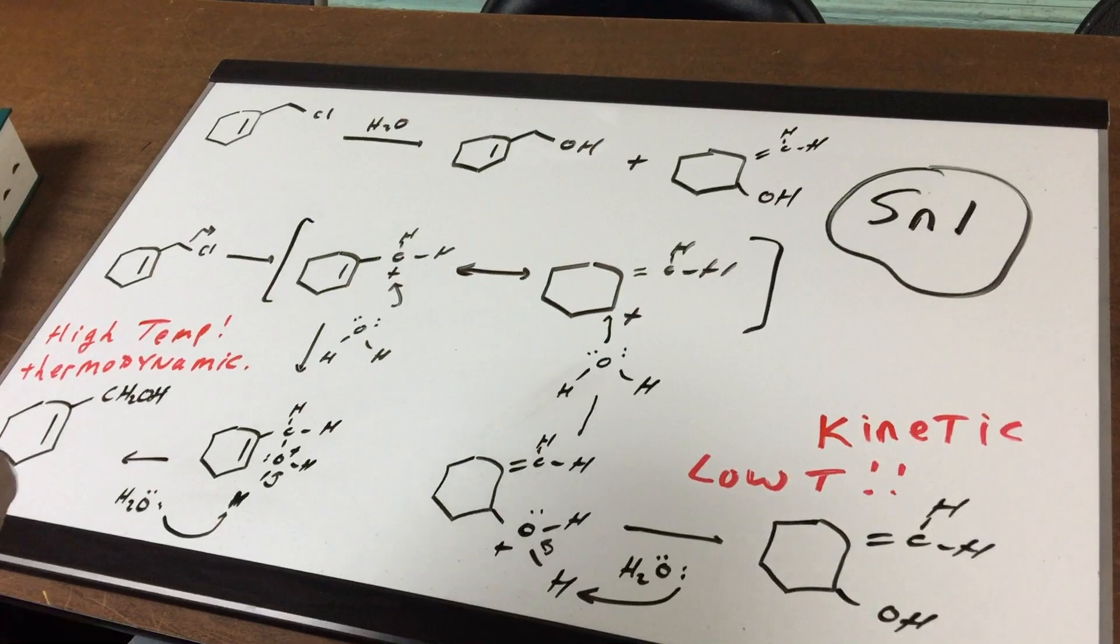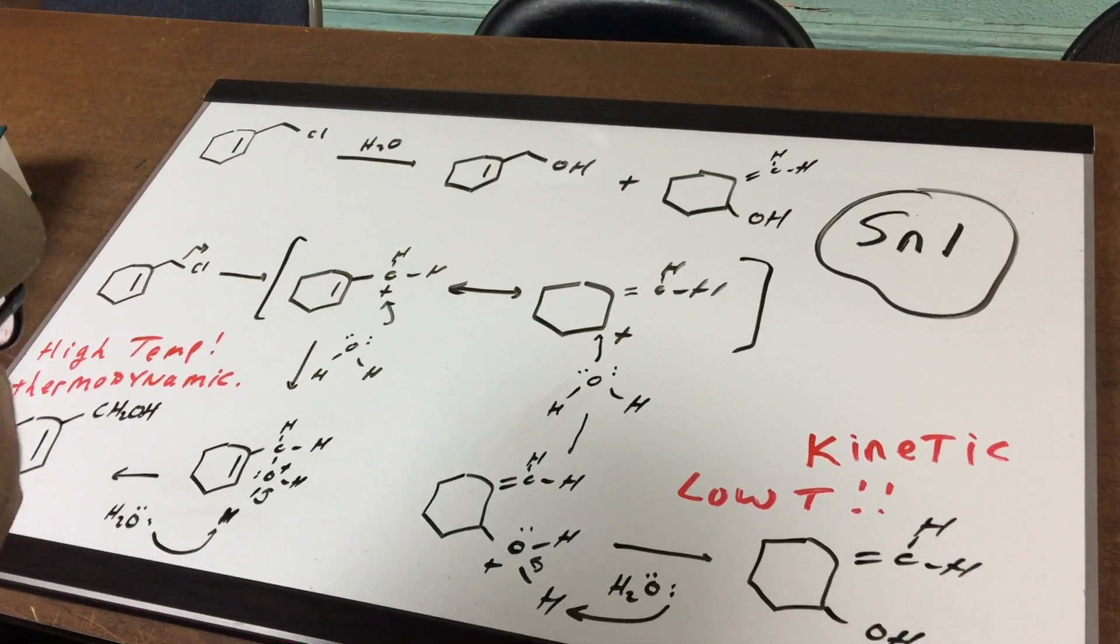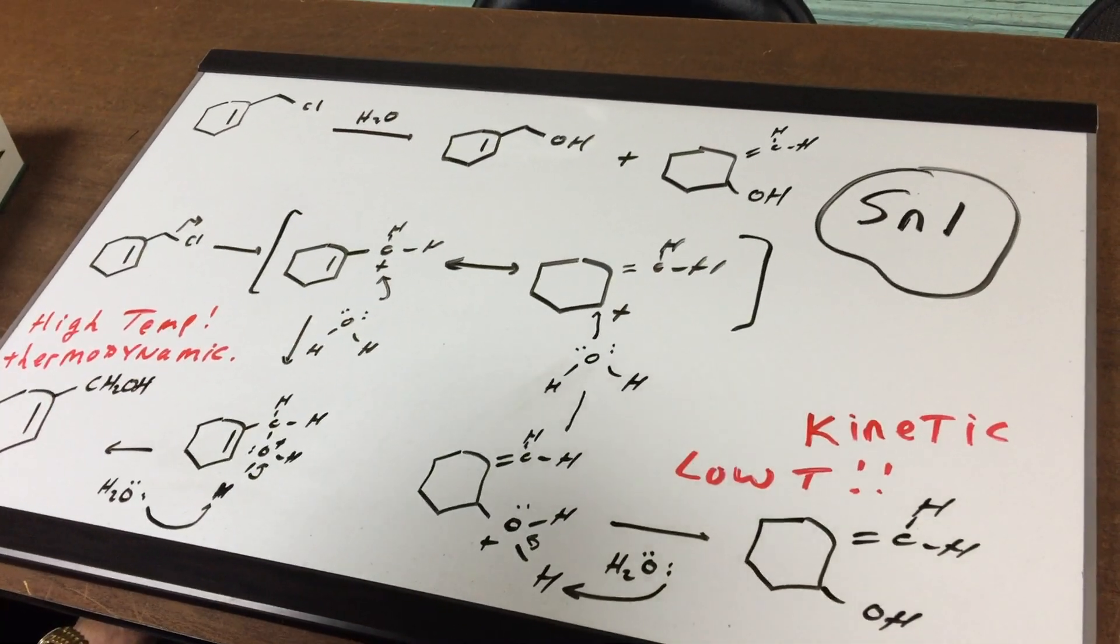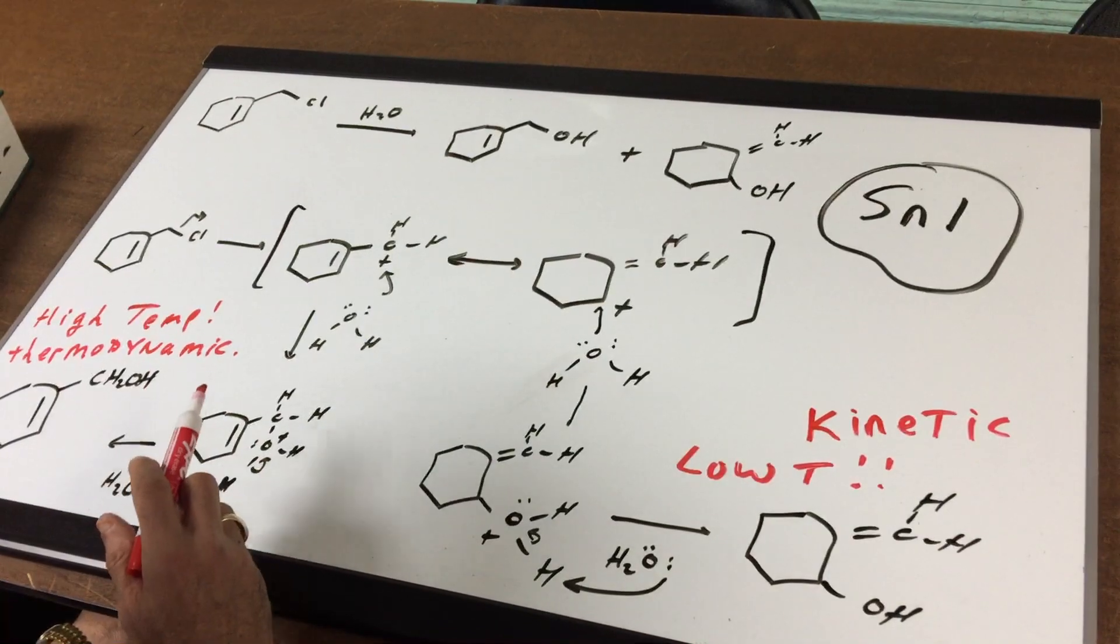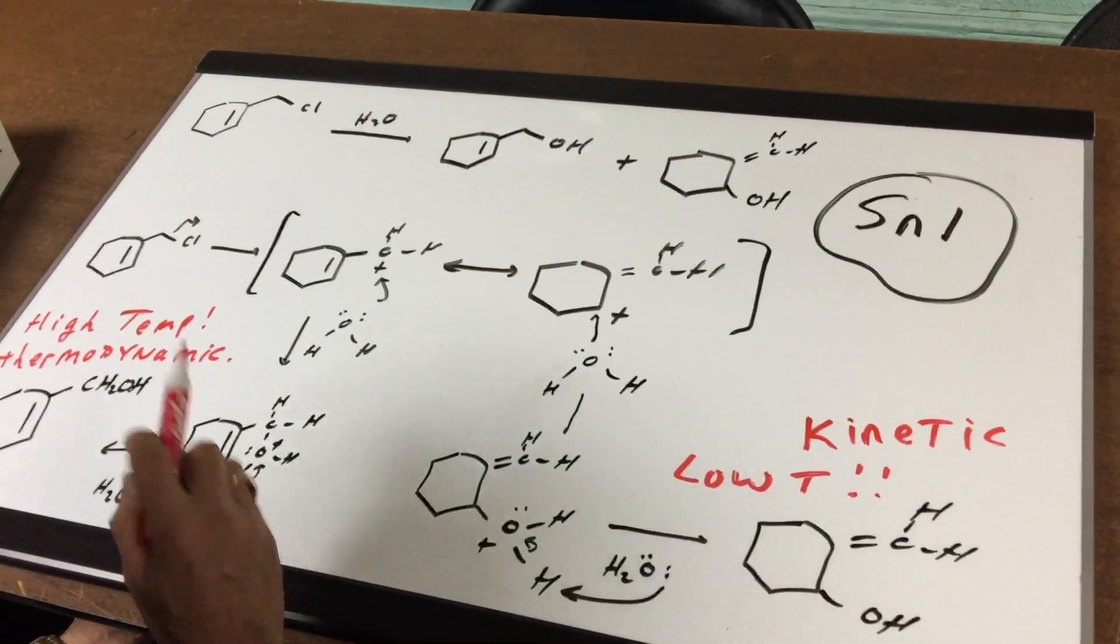This primary is very different from a normal primary. We're going to see that if we can form a very stable carbocation, then it will seek the possible competing reaction, which is SN1.